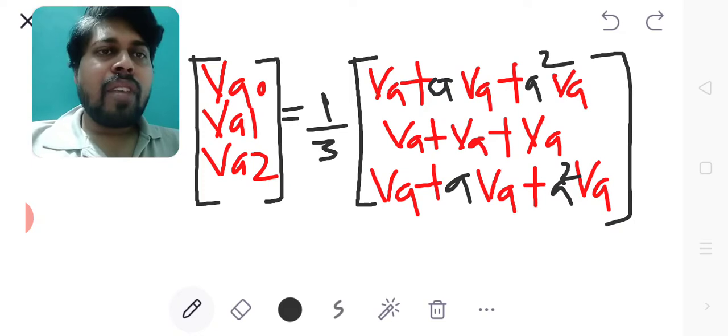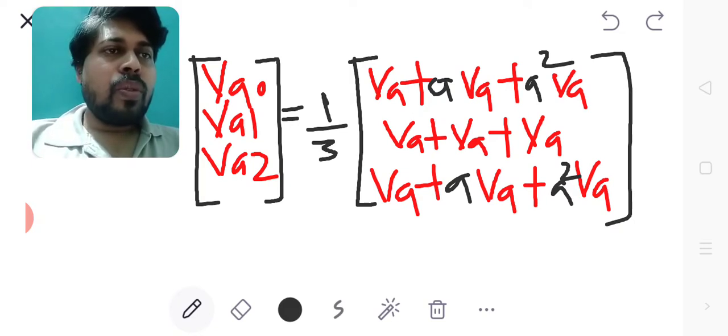VA0 VA1 VA2 equals 1 by 3 into VA plus A VA plus A square VA. Second row is VA plus VA plus VA. Third row is VA plus A VA plus A square VA.